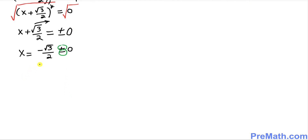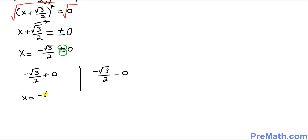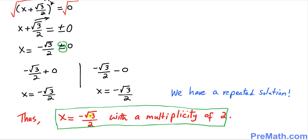Splitting the plus and minus: we get negative square root of 3 divided by 2 plus 0, and negative square root of 3 divided by 2 minus 0. Simplifying, both give x equals negative square root of 3 divided by 2. We have a repeated solution, so our solution is negative square root of 3 divided by 2 with a multiplicity of 2 — meaning this solution appears twice. Thanks for watching, and please subscribe to my channel for more exciting videos.